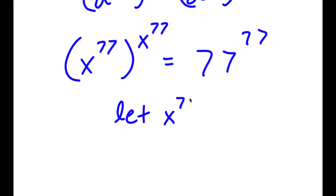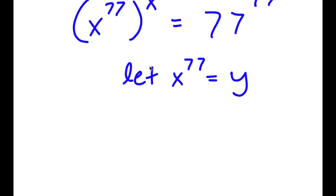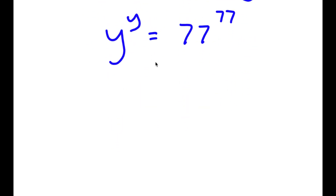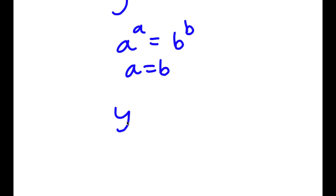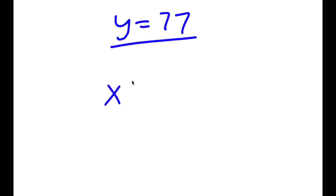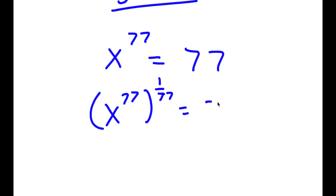Now, I'm going to let x to the power of 77 equal the variable y. So if I substitute in y for x to the power of 77, I get y to the power of y is equal to 77 to the power of 77. Now, if a to the power of a is equal to b to the power of b, this means a is equal to b. So y equals 77. And remember, we let x to the power of 77 equal y, so now I have x to the power of 77 is equal to 77. To solve this, I take the power of 1 over 77 on both sides: x to the power of 77 to the power of 1 over 77 is equal to 77 to the power of 1 over 77.